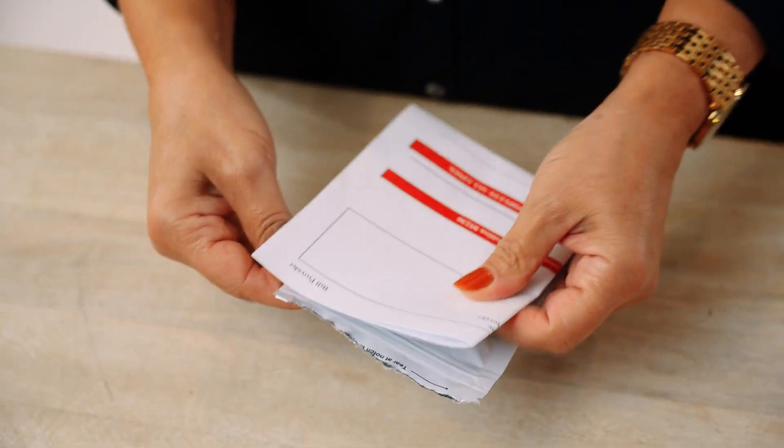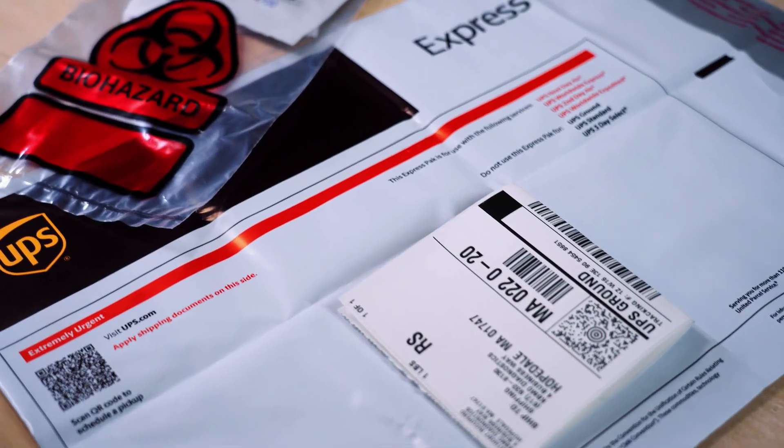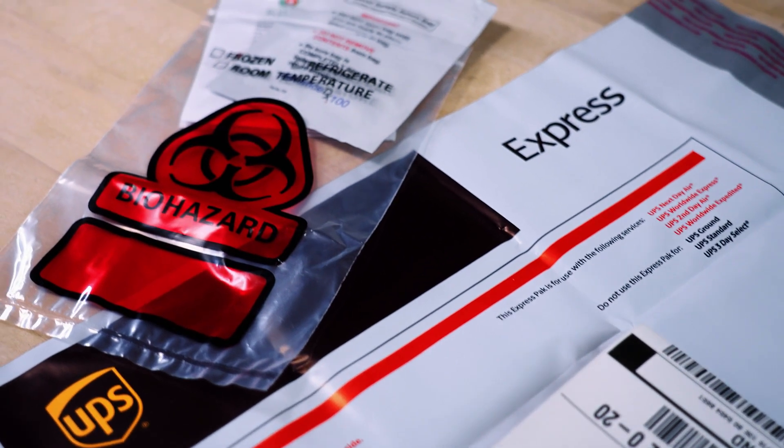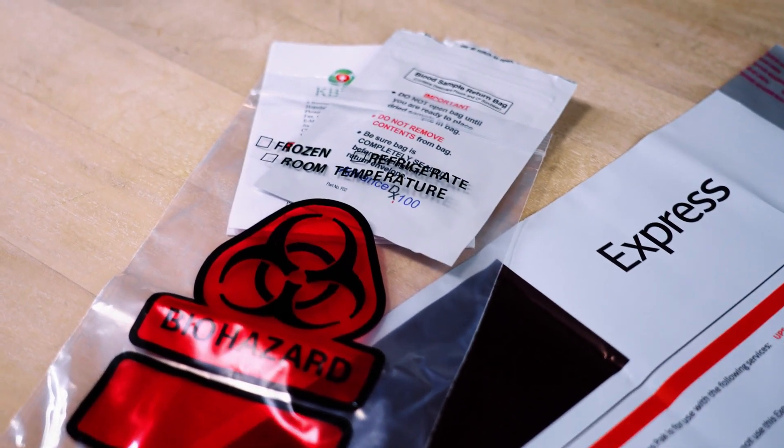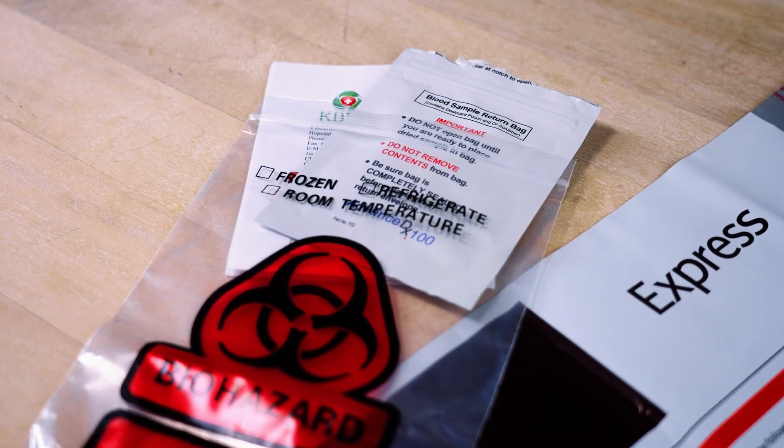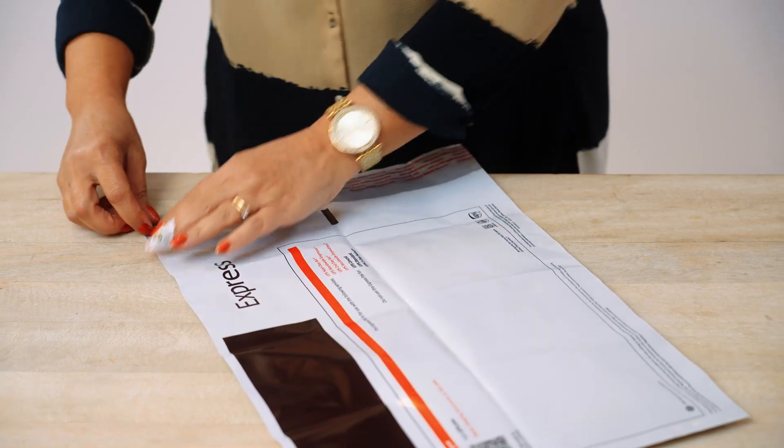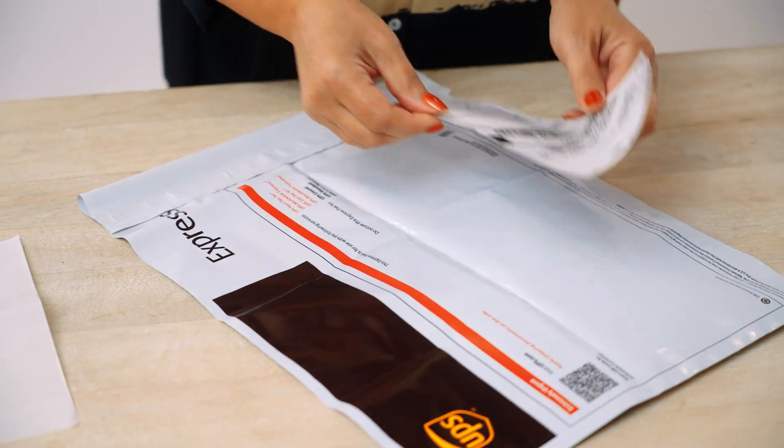Then, put the blood sample return bags inside the provided clear plastic bag and place the test order form into the outer pouch of the clear plastic bag. Finally, insert the clear plastic bag into the pre-labeled shipping envelope and seal it.